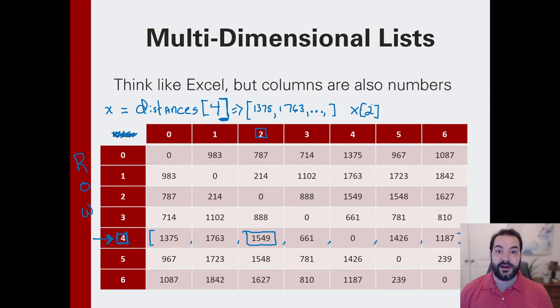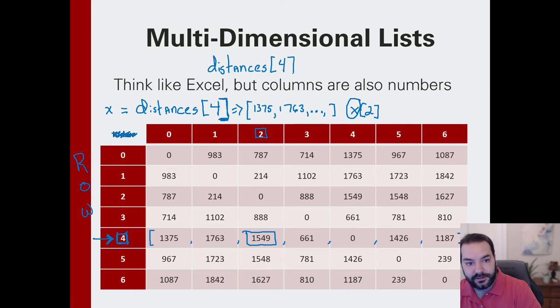Again, that's just referencing the element in a list. So, without having to use an additional variable, what we can do is we can utilize the fact that everything to the left of our square brackets gets evaluated first, very similar to when we had nested function calls. So, all we would need to do in our case of getting our 1549 is distances four, close that square bracket, two.